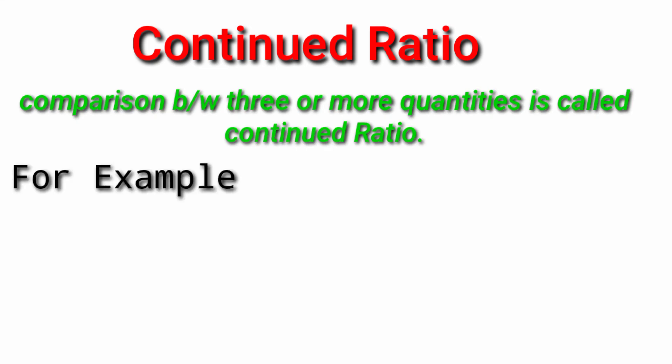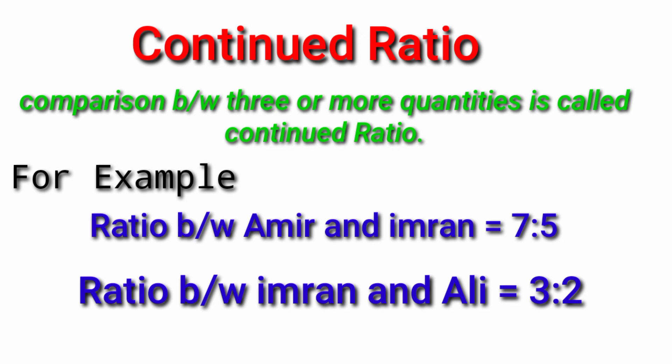Continued ratio. Comparison between three or more quantity is called continued ratio. For example, ratio between Amir and Imran is equal to 7 ratio 5. Ratio between Imran and Ali 3 ratio 2.